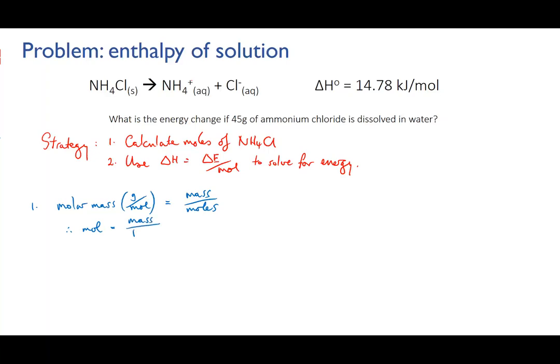We know we have 45 grams so that will go on the top. We need to calculate the molar mass of ammonium chloride and you'll find that it is 53.5 grams per mole. When we do that calculation we find that gives us 0.841 moles of ammonium chloride.